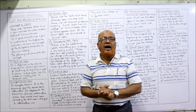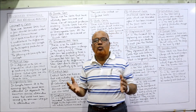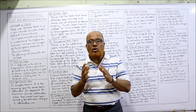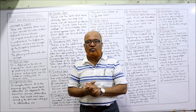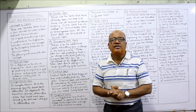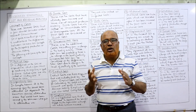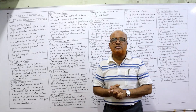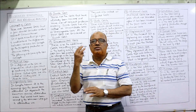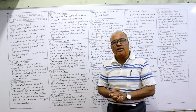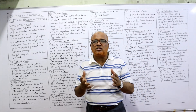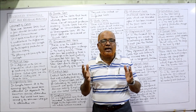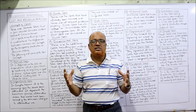Unit number two covered demand analysis — what is demand, what is the law of demand, what is the elasticity of demand, cross-elasticity, and income elasticity of demand. The third unit covered supply analysis — what is supply, what is the law of supply, and elasticity of supply — along with utility analysis and consumer surplus. Unit number four covered production analysis — what is production, what are the factors of production, what is the law of scale, and what are the economies and diseconomies of large-scale production.